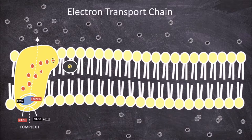At the end of the chain of iron-sulfur centers, the two electrons are transferred to the mobile electron carrier ubiquinone, one at a time. The first electron is transferred along with a hydrogen, creating the semiquinone intermediate form. The second electron is transferred along with another hydrogen, creating the reduced form, ubiquinol.